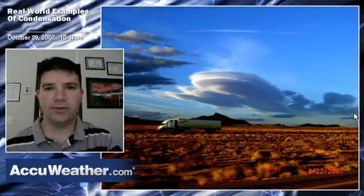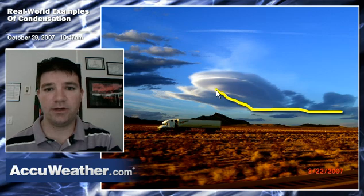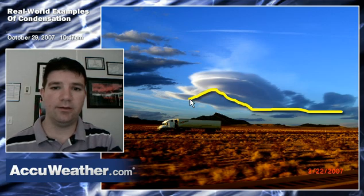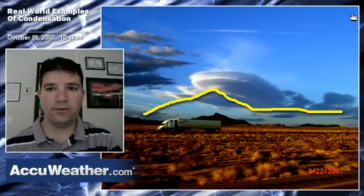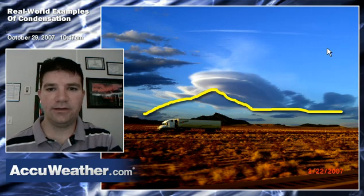One of the things we learned about condensation was that it happens when air cools. Imagine the air flowing along in the atmosphere — it hits this mountain, it has to go up, and then it comes back down on the other side. As air goes up in the atmosphere, it cools, and as it reaches what's called the condensation point, the cloud forms.